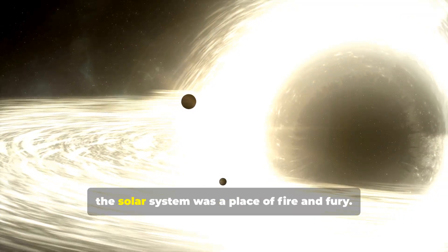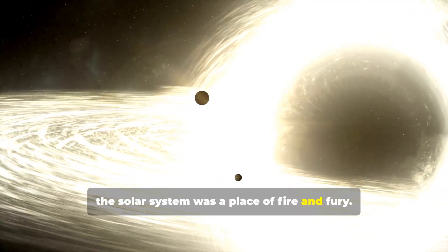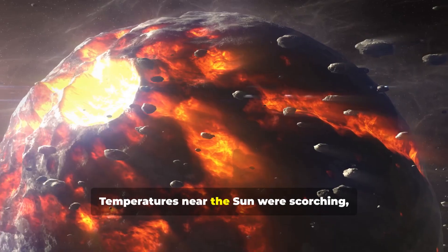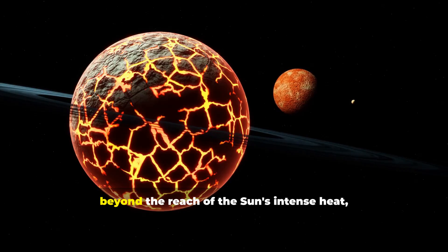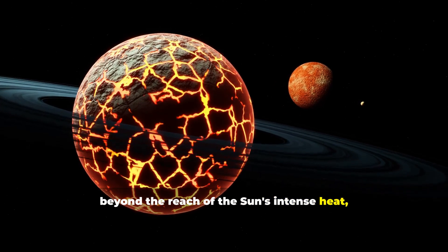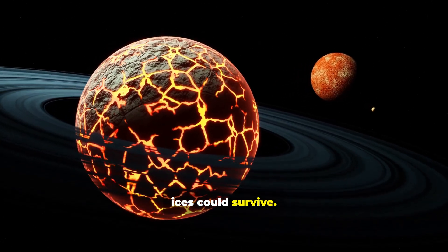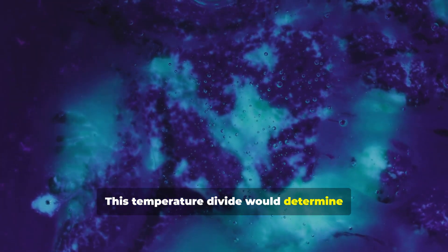In these early days, the solar system was a place of fire and fury. Temperatures near the sun were scorching, hot enough to vaporize metals. Farther out, beyond the reach of the sun's intense heat, ices could survive. This temperature divide would determine everything.